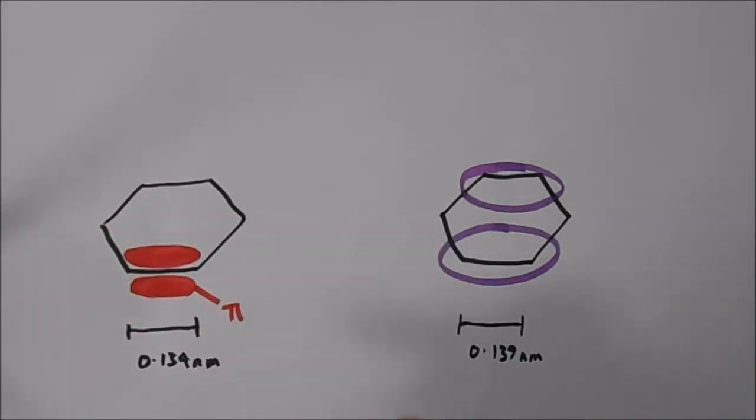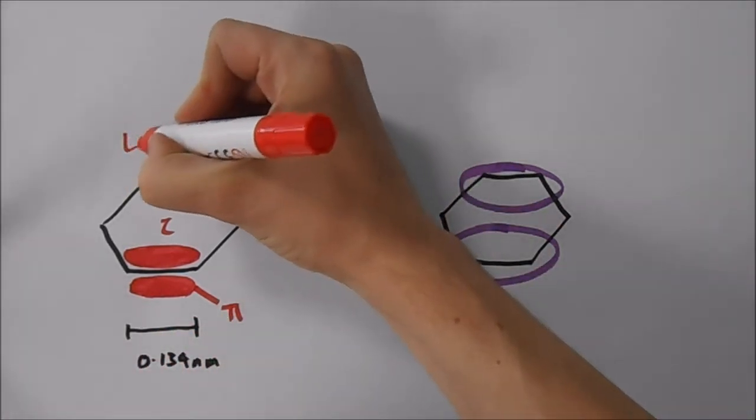And we have two electrons in this pi bond. The pi bond is about 0.134 nanometers in size, and we call that localized.